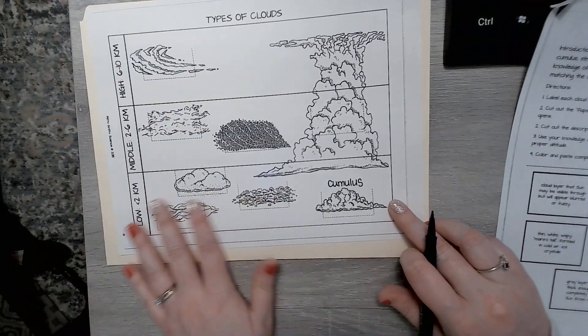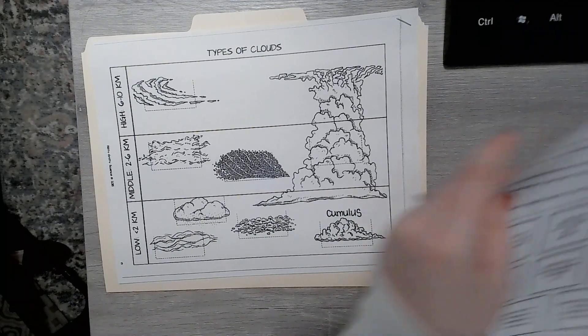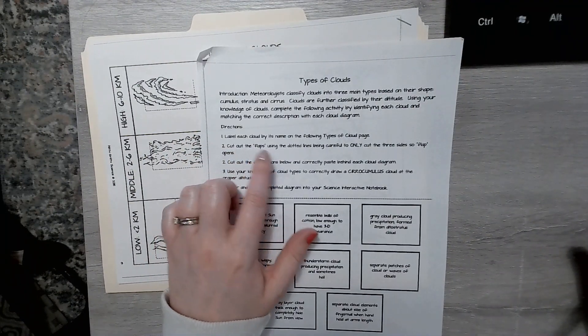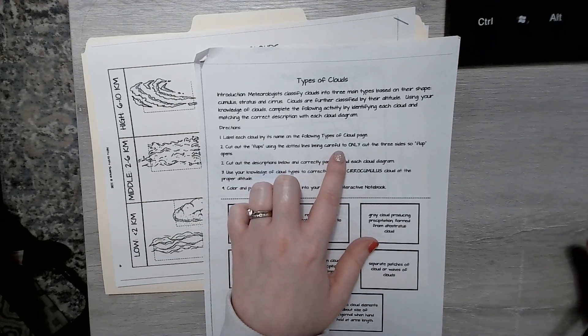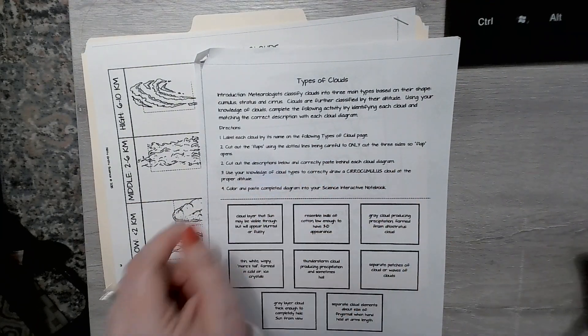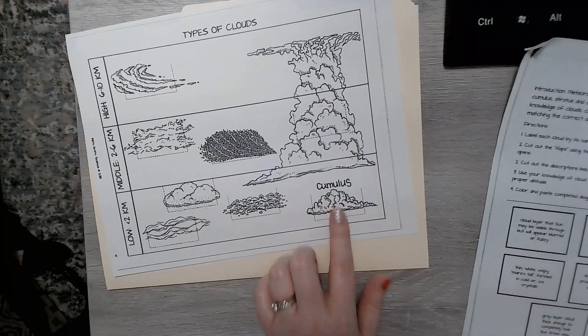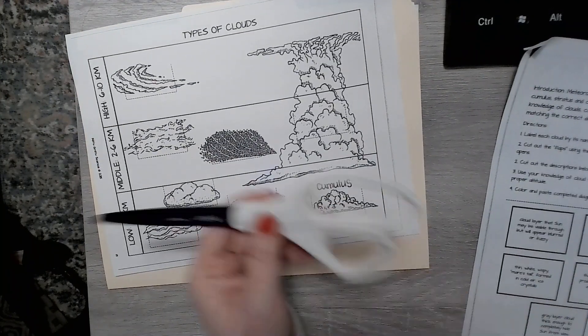So I'm just going to write cumulus right above it. You're going to do that with the remaining seven. Now, cut out the flaps using the dotted lines, being careful to only cut the three sides so the flap opens. Now, what does that mean? Well, if I were to cut out my cumulus flap, I'm going to need my scissors.